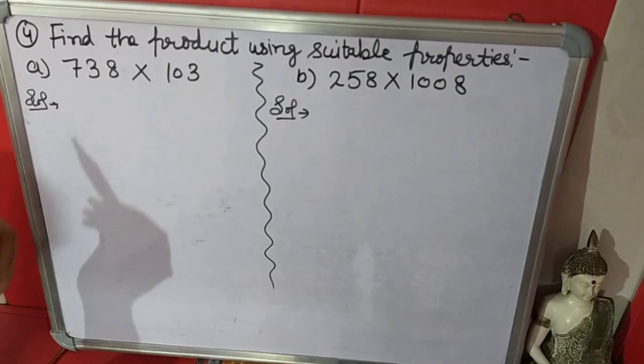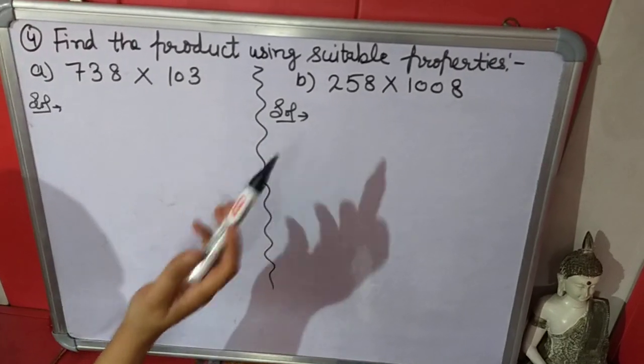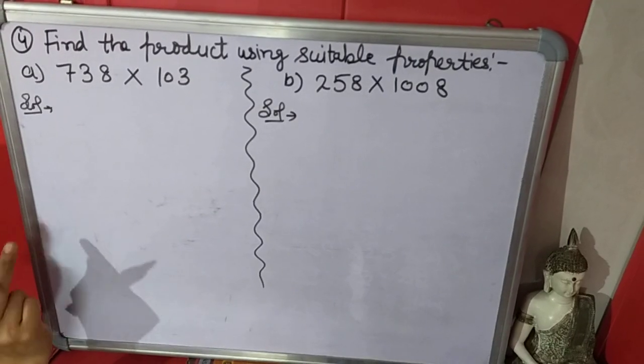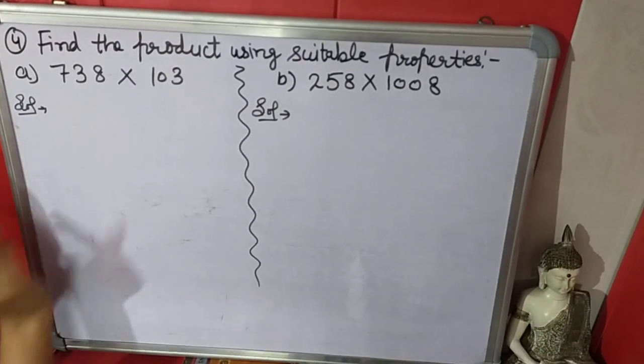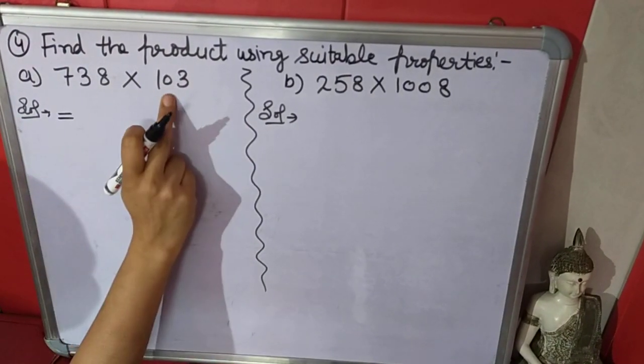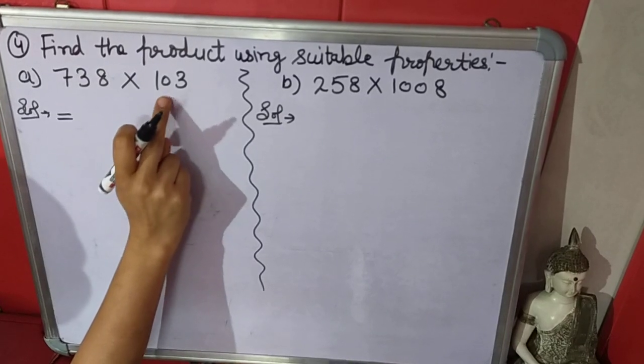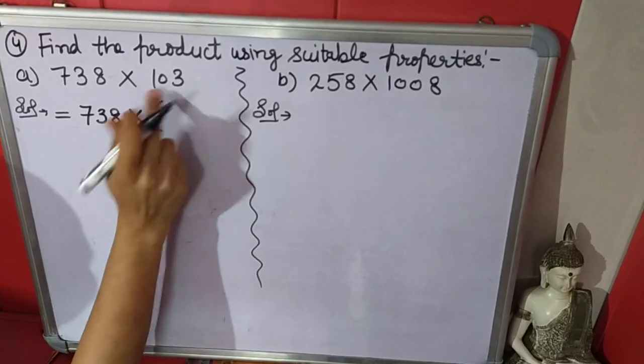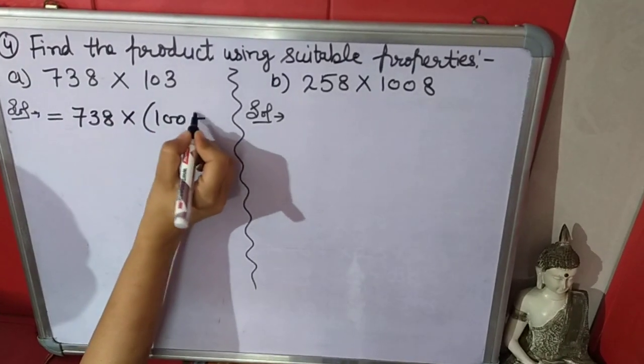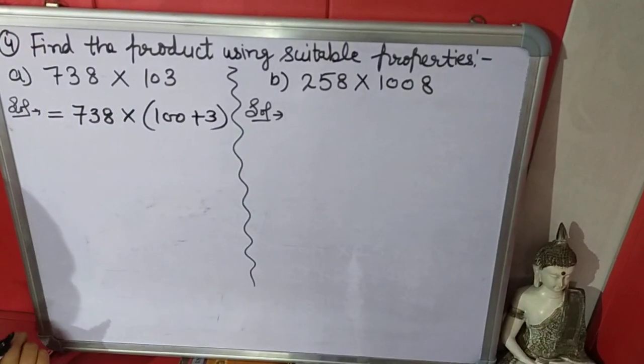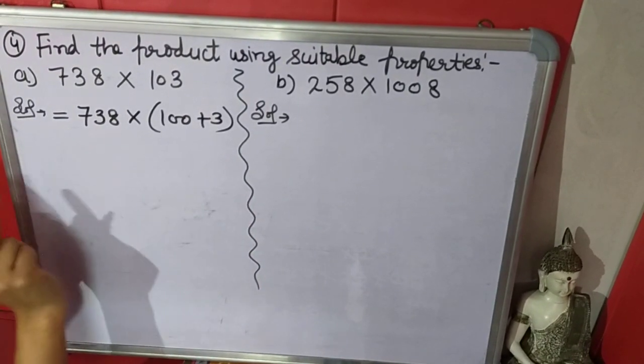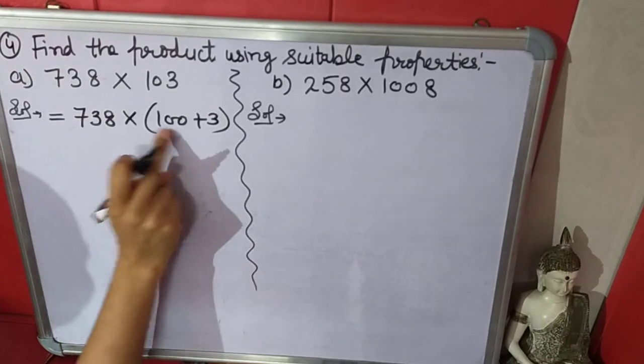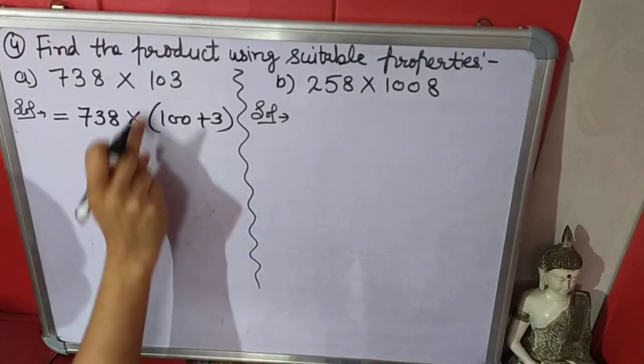Now moving on, fourth question: find the product using suitable properties. I told you 4 properties. In this question, distributive property we will use. This number we will break. 738 multiply by - we can write 100 plus 3.